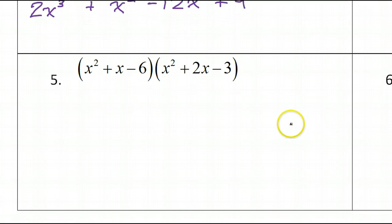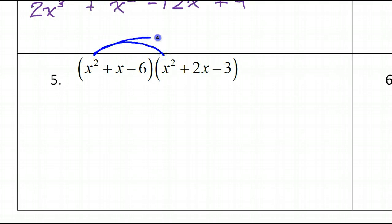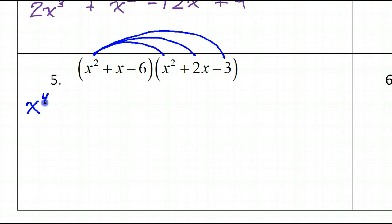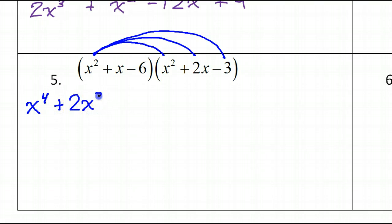For number 5, same thing — only we're going to do it 3 times. Let's start by distributing the X squared, multiplying it by each of these 3 terms. X squared times X squared is X to the fourth power. Then X squared times 2X is 2X to the third power. And X squared times negative 3 is negative 3X squared.